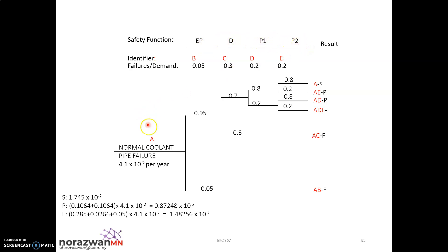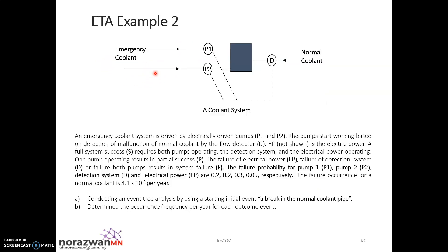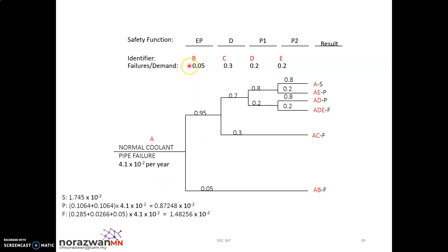We label the safety functions as A, B, C, D, and E. The failure rates are: 0.05 for electrical power, 0.3 for detection system, 0.2 for pump one, and 0.2 for pump two.